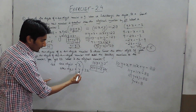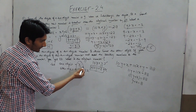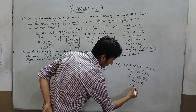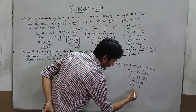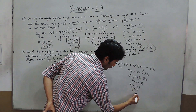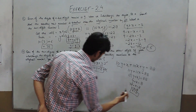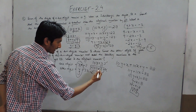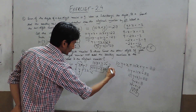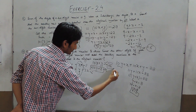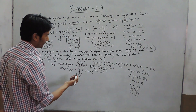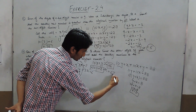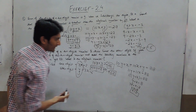We also know that y is 3 times x. Substituting y with 3x: 3x plus x equals 8, so 4x equals 8, and x equals 2. Since x is 2, y must be 6. The number could be 26. But because we don't know which digit is in which place, the number could also be 62.